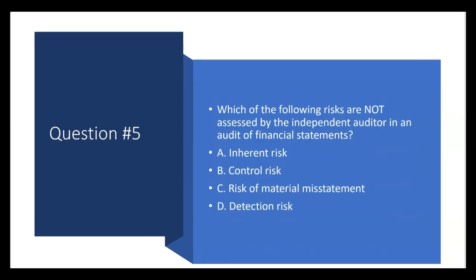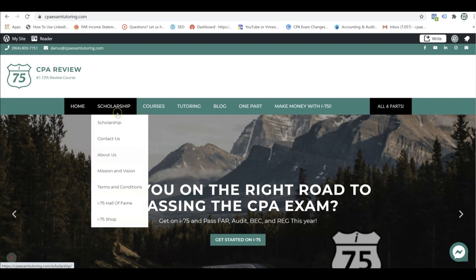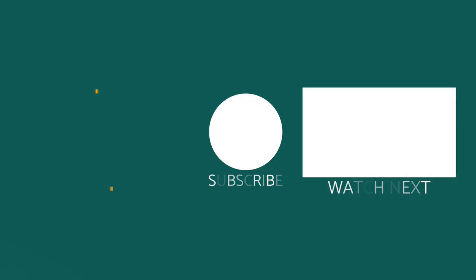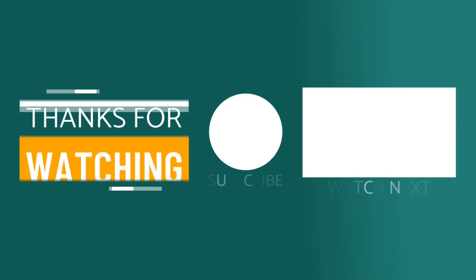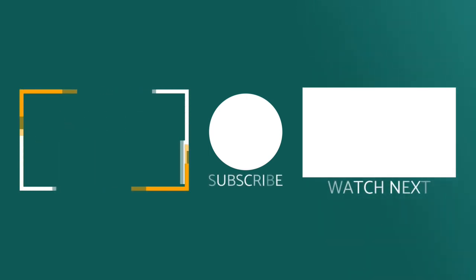We're going to stay with the audit risk model and I'll ask you one more: 'Which of the following risks are not assessed by the independent auditor in an audit of financial statements?' The choices are inherent risk, control risk, risk of material misstatement, and detection risk. I'm not going to tell you the answer — you're going to tell me. Get in touch with me, don't forget to like the video and subscribe to the channel, and apply for an I-75 scholarship if you haven't already. Let me know what you think the answer to this question is.